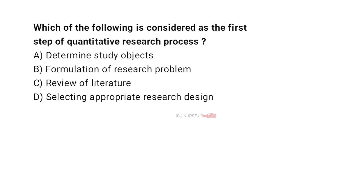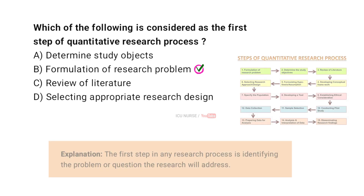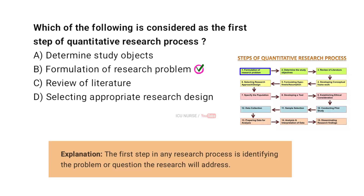Which of the following is considered as the first step of quantitative research process? A. Determine study objects. B. Formulation of research problem. C. Review of literature. D. Selecting appropriate research design. And the correct answer is B. Formulation of research problem. The first step in any research process is identifying the problem or question the research will address.